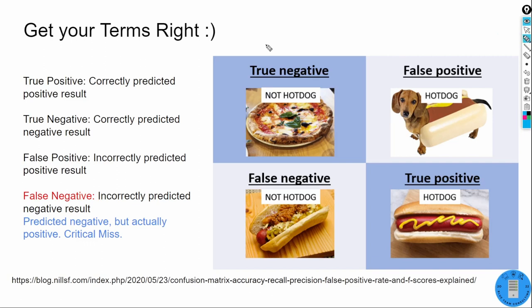This is essential terminology — I would expect it on any interview question if you're going for a SOC analyst or cybersecurity analyst role: true positive, true negative, false positive, and false negative. Alerts come in and you review them, and they fall into one of these four categories. It helps to replace 'true' with 'correctly' and 'false' with 'incorrectly' — that often clears up where most people get confused.